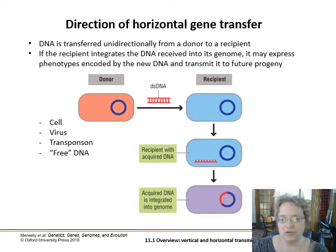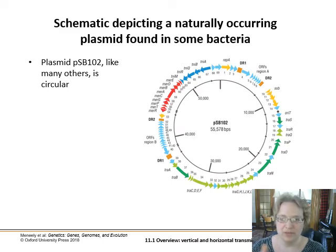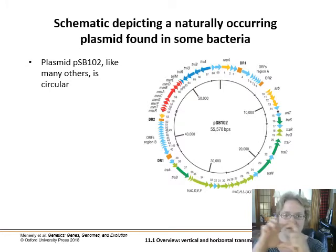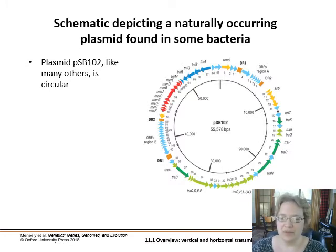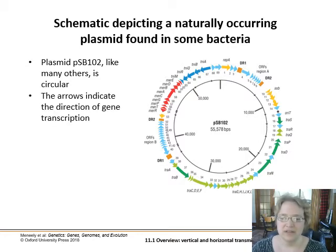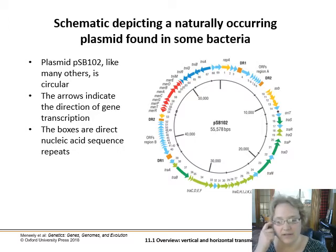If the recipient integrates the DNA into its genome, then the phenotypes encoded by the new DNA will be expressed and potentially transmitted to progeny. Plasmids are found in bacteria — a plasmid is basically a circular loop of DNA. Bacteria have their core chromosome, which is also circular, but there are these little floating loops within the cell that can be transmitted between bacteria of the same or even different species. Here's plasmid pSB102: the arrows show the direction of gene transcription — forward and backward depending on whether the coding gene is on the template or coding strand — and the little boxes represent nucleic acid sequence repeats.